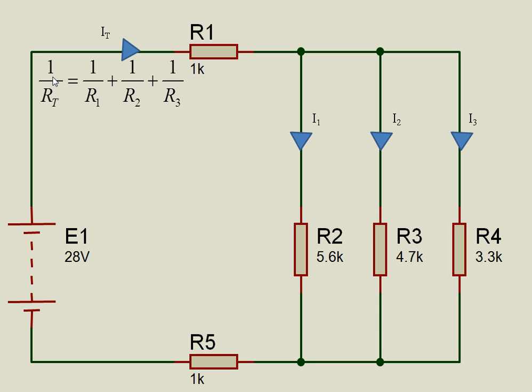So the generic form for any parallel network is 1 over RT equals 1 over R1 plus 1 over R2 plus 1 over R3. So in this case it's 1 over 5,600 plus 1 over 4,700 plus 1 over 3,300. If we put those into a calculator we would get that the total resistance for the parallel network is 1,440 ohms.